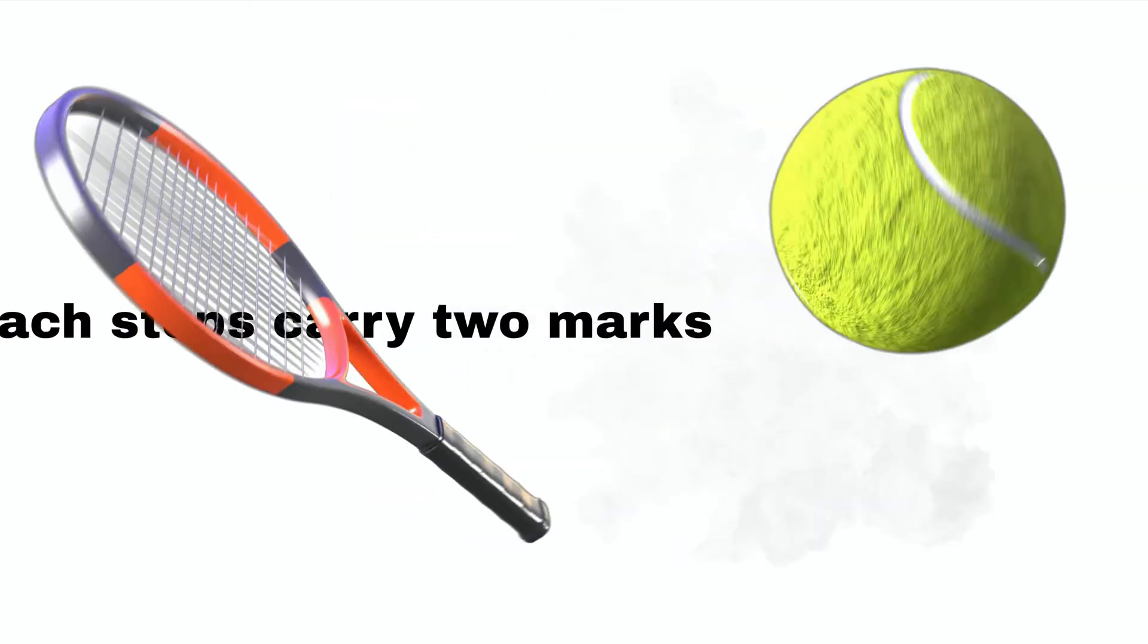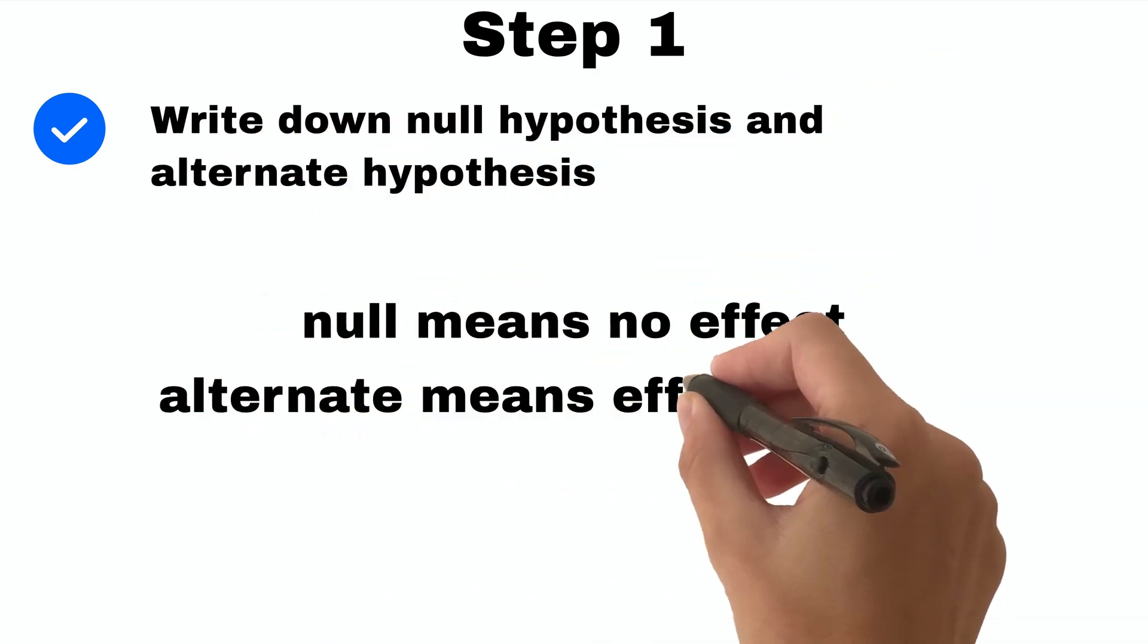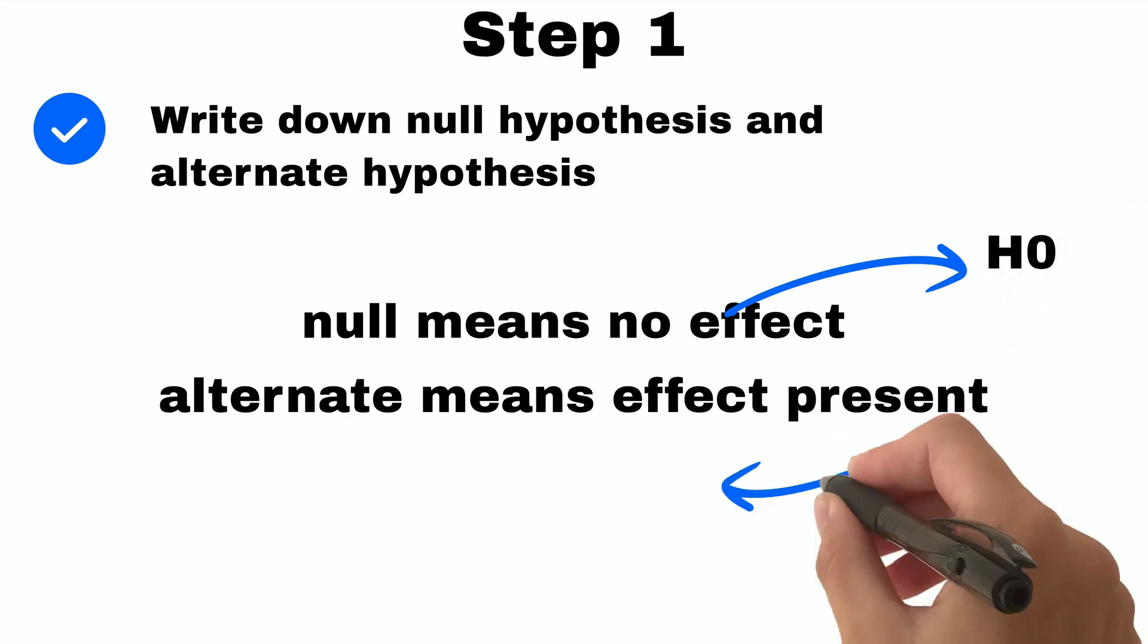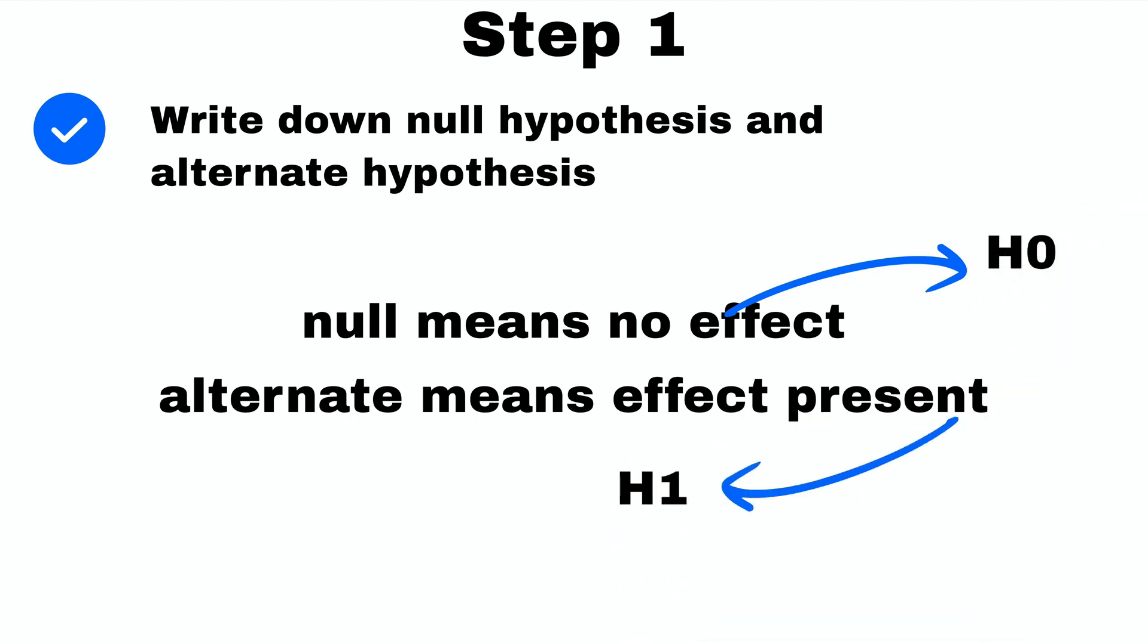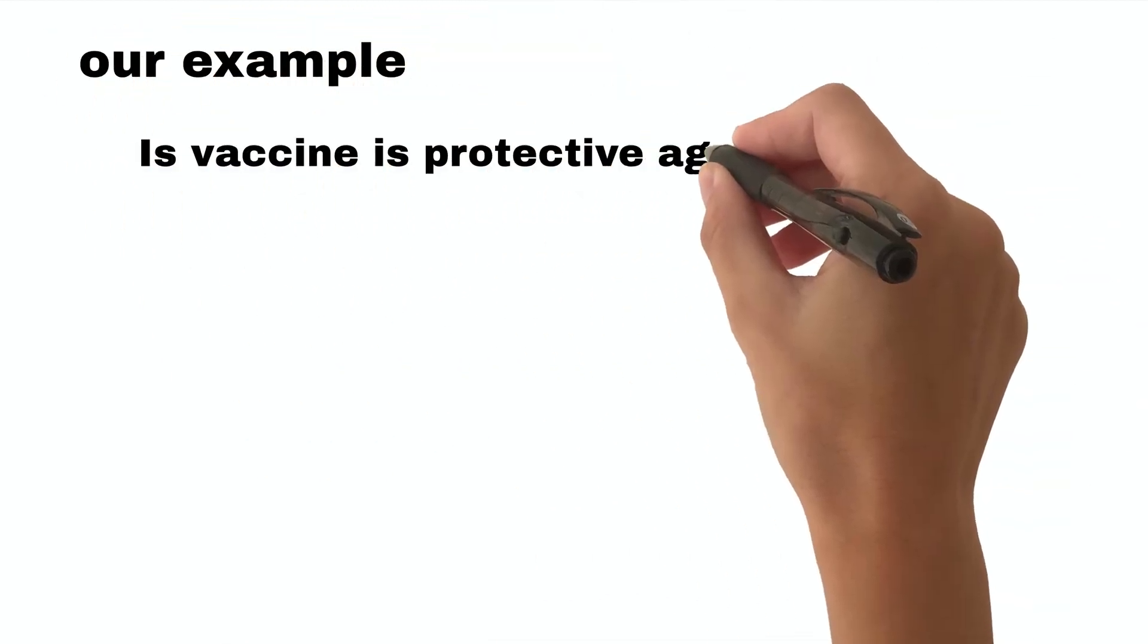Step 1: Write down null hypothesis H0 and alternate hypothesis H1. Null means no effect, alternate means effect present, or you can say there is no difference or there is a difference between two groups. In this example, vaccine is protective against measles is our hypothesis.